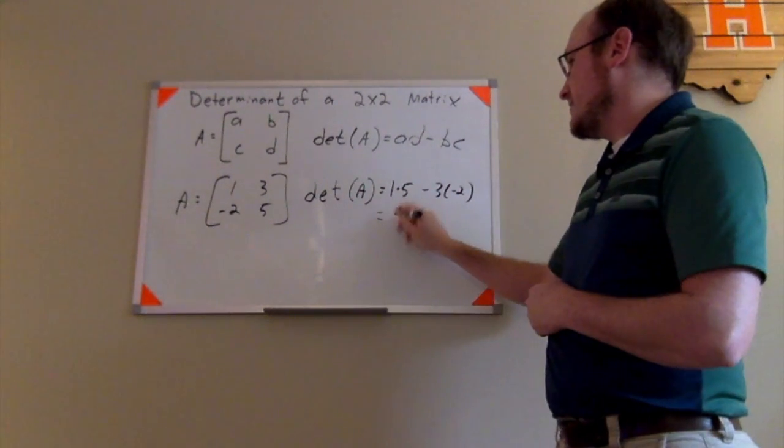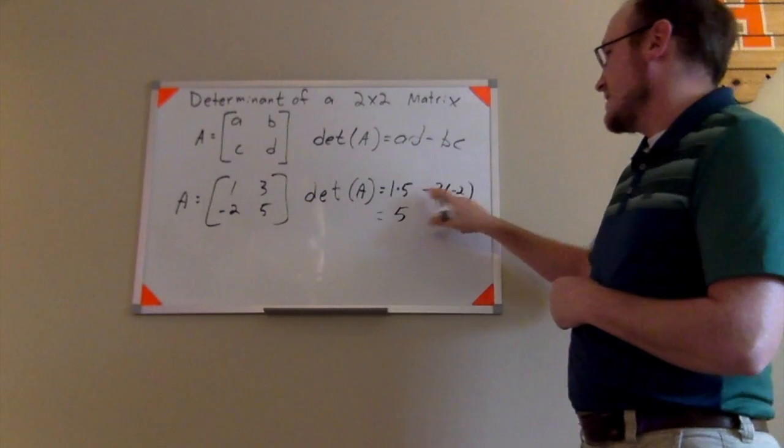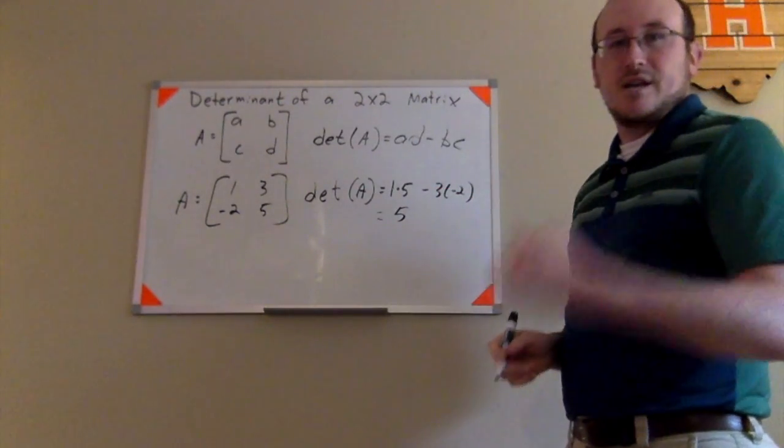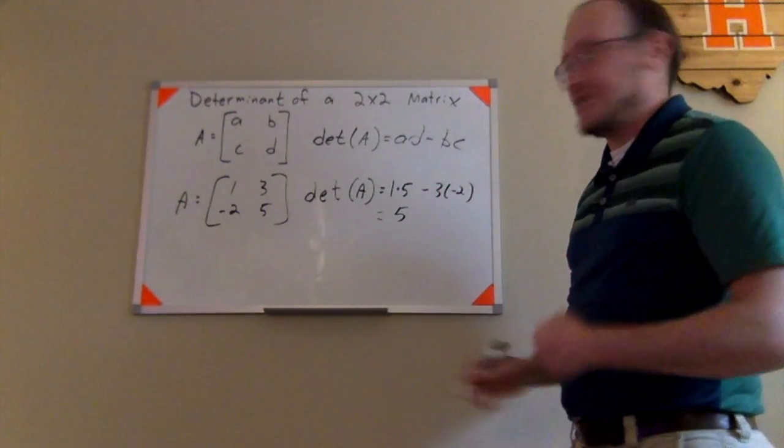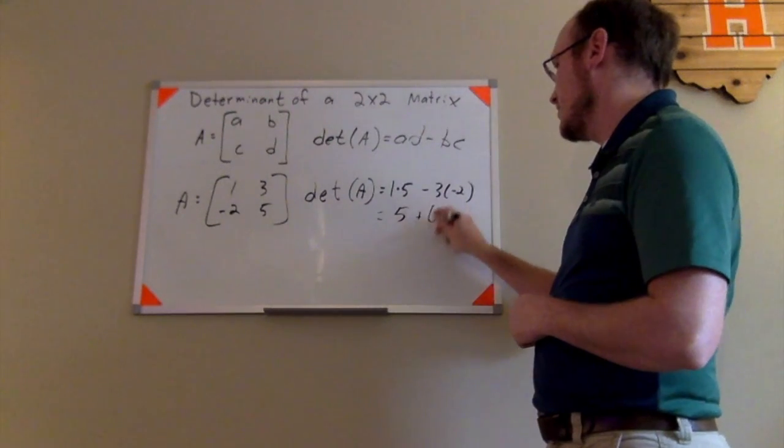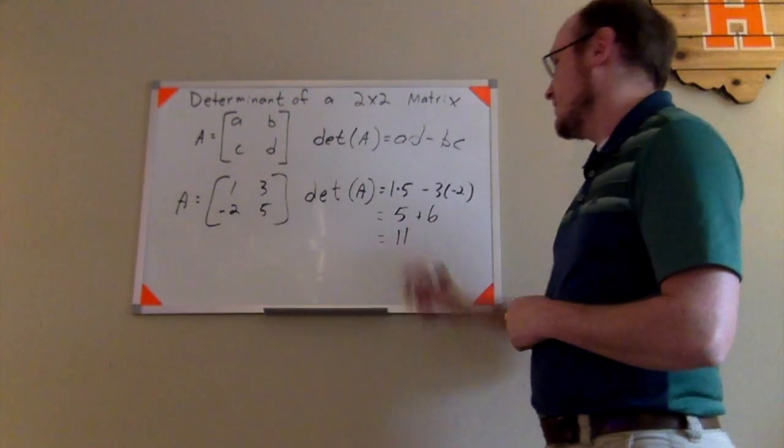So in this case, 1 times 5 is 5, and then minus 3 times negative 2 is negative 6. Minus negative 6 in this instance actually would turn into plus 6, which would give you 11 there.